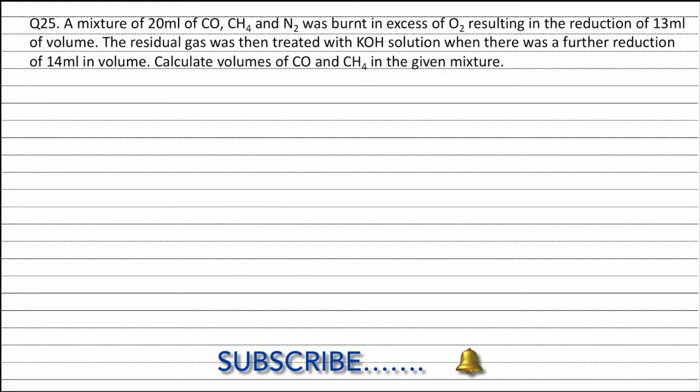Question 25. A mixture of 20 ml of carbon monoxide, CH4, and nitrogen was burnt in excess of oxygen, resulting in the reduction of 13 ml of volume. The residual gas was then treated with KOH solution, when there was a further reduction of 14 ml in volume. Calculate the volumes of carbon monoxide and CH4 in the given mixture.